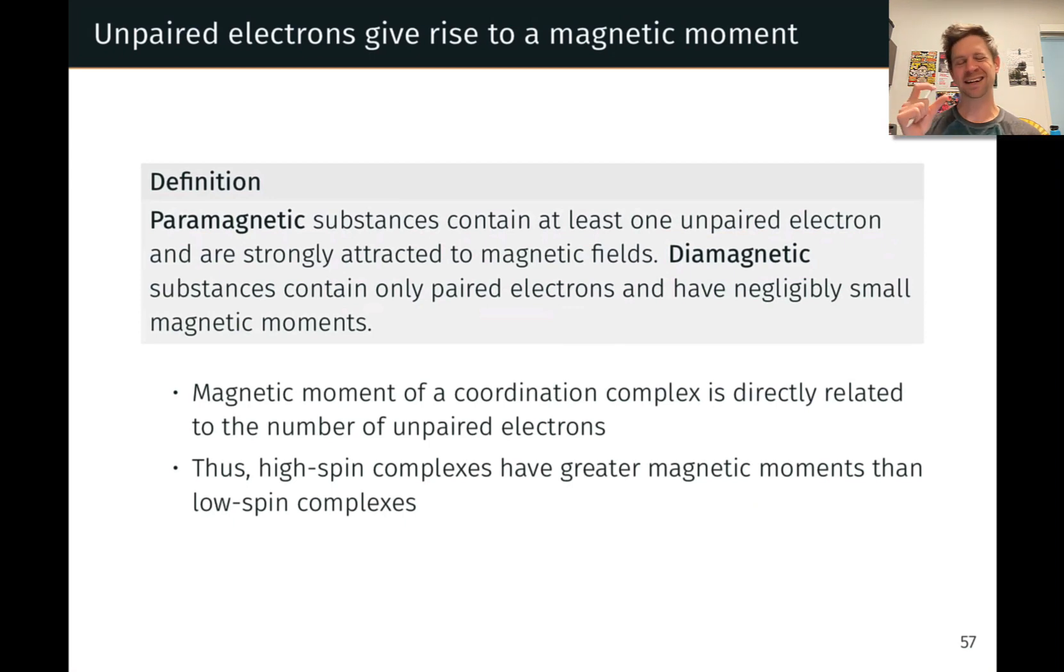Electrons whose little magnetic fields are not canceled out by another paired electron of the opposite spin have a big impact on the magnetic properties of any material. Because unpaired electrons are quite common in coordination complexes of the transition metals, this is an area where magnetism is very commonly seen.